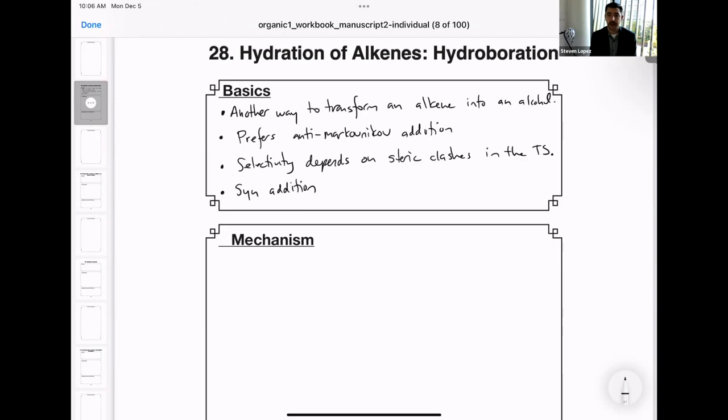So this is another way to transform an alkene into an alcohol. We've learned several of those forms already, and this is one that prefers the anti-Markovnikov addition, that is adding the alcohol to the less substituted side of that alkene. This selectivity depends on steric clashes in the transition state, and this is an example of a syn addition. So let's jump into that mechanism.